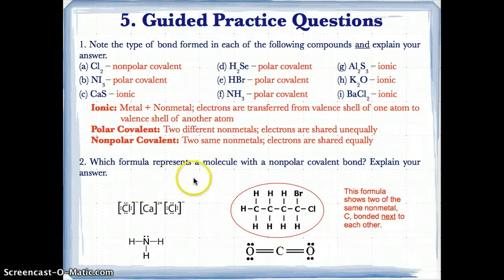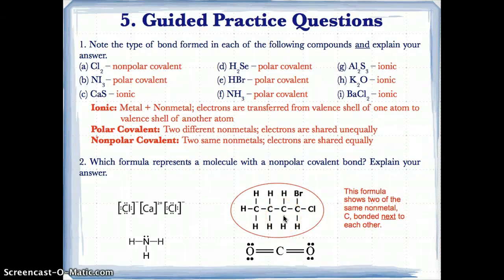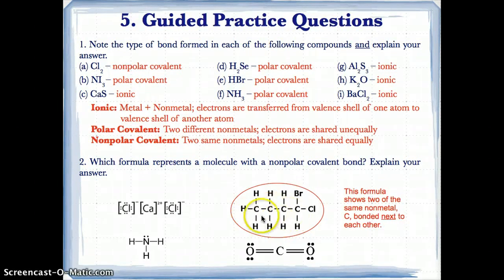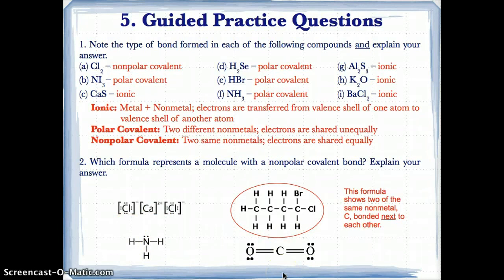For number two: the pairs of C atoms bonded right next to each other in the molecule show there's a nonpolar covalent bond, because two of the same nonmetal are bonded together. The other options don't work: one is ionic, and the others have no same nonmetals bonded next to each other. This is the only molecule with two of the same nonmetal, C and C, bonded right next to each other for a nonpolar covalent bond.